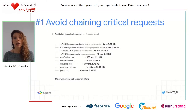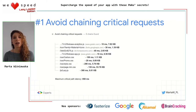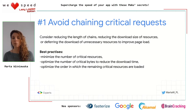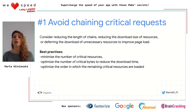The most common issue is avoiding chaining critical requests. Critical request chains are series of dependent network requests necessary for loading your page. The longer the chains and the bigger the download sizes, the more significant the impact on load speed. Best practices include: minimize the number of critical resources — eliminate them, mark them as async, or defer downloads; optimize the number of critical bytes to reduce download time and round trips; and manage the order in which remaining critical resources are loaded, downloading all critical assets first to shorten the chain's length.